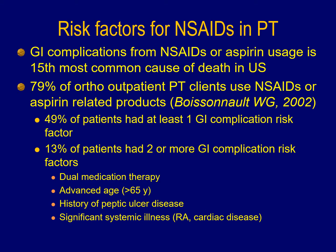About 8 out of 10 patients who see physical therapists in adult outpatient orthopedic clinics use some type of non-steroidal or aspirin-related product. At least half of those patients will have at least one GI complication risk factor, and probably 10 to 15 percent will have two risk factors. These risk factors are important — if risk factors for a gastric bleed are present, we should know about them and intervene appropriately.